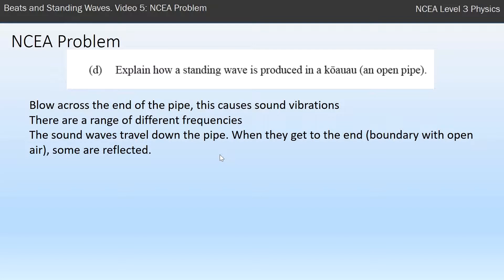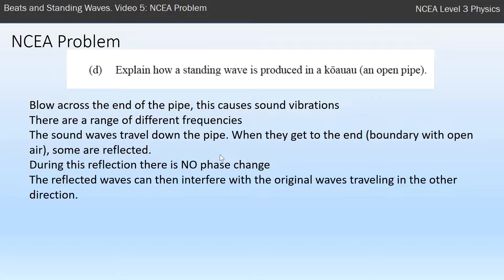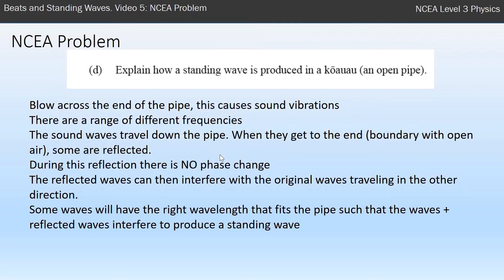Not all of them, but some of them. That's hard for some people to understand—why would it reflect at the point where it just opens up? It is a boundary, and waves reflect at boundaries. Some of those waves go back down the pipe again. This is important for an open pipe: the reflected waves don't change phase. They have the same phase when they're coming back the other way. The reflected waves can then interfere with the original waves traveling in the other direction. We can get constructive interference and destructive interference.